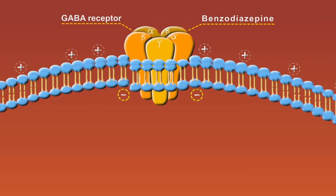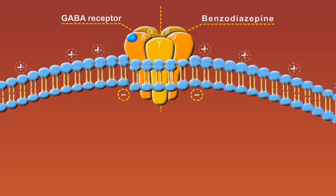When the receptor is empty, the channel is closed and the chloride ions cannot traverse the membrane of the brain cell. When GABA binds to the receptor, it triggers an opening of the chloride channel, which increases chloride conductance.